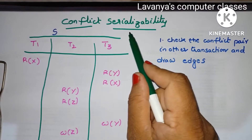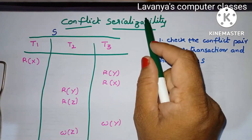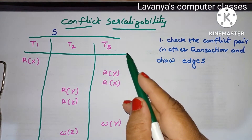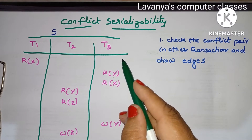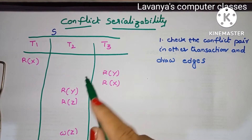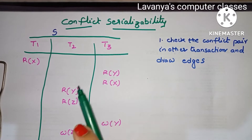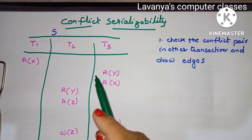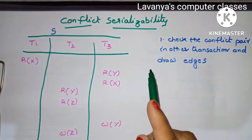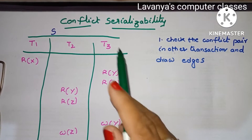Conflict serializability means it is possible to convert any non-serial schedule — is it equivalent to a serial schedule? That is the concept of serializability. For checking that, we have two methods: one is conflict serializability, and the second one is view serializability.